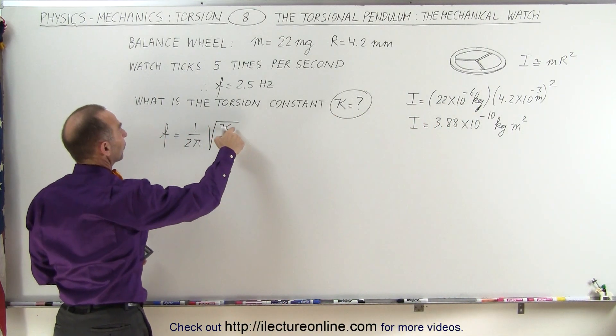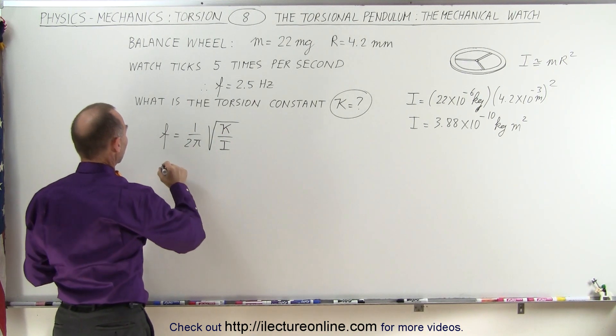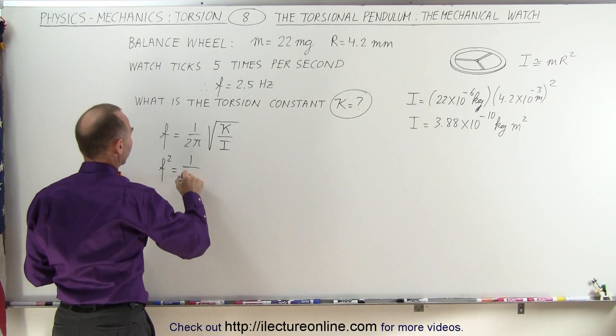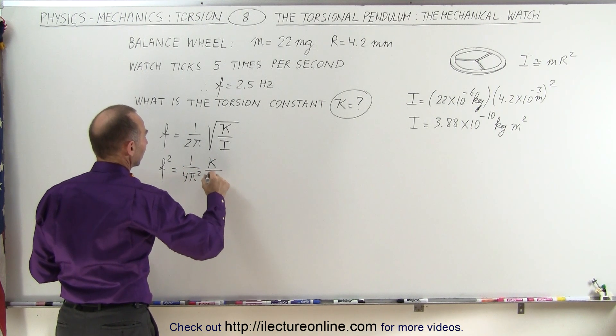Now let's solve this equation for kappa, the torsional constant. So let's square both sides: we have the frequency squared is equal to 1 over 4π² times kappa divided by the moment of inertia.